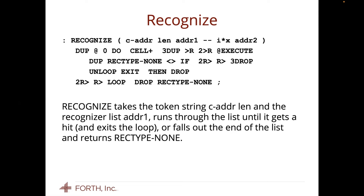The inner loop 'recognize' that does all the work is a very simple loop — it just runs down the list. C-adder-len is the token you're looking for, and adder1 is the address of the actual recognizer sequence; the system one is called rec-stack. It goes through and in the inner loop, if it finds a match, it just bails out — 'on loop exit.' What it comes out with is whatever the fetch-executed thing has pushed on the stack. If it doesn't find it, it just falls out the end with rec-type-num, which itself is also useful.